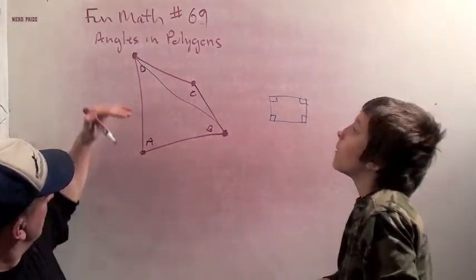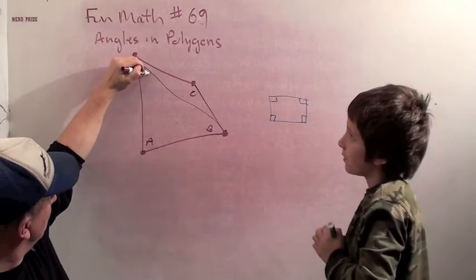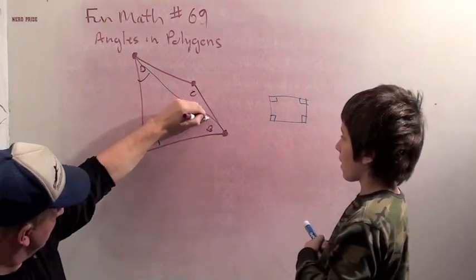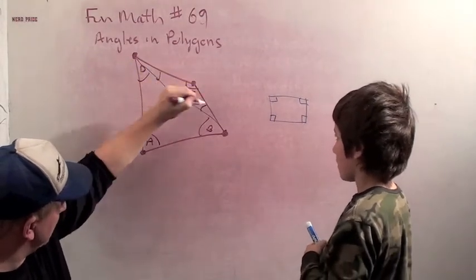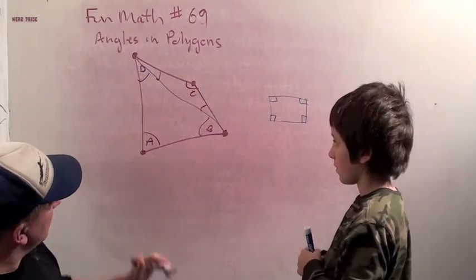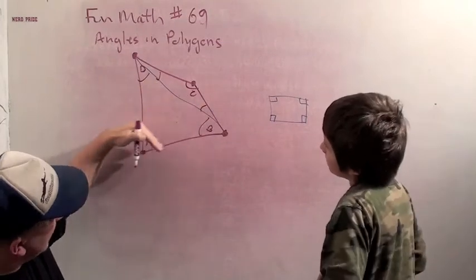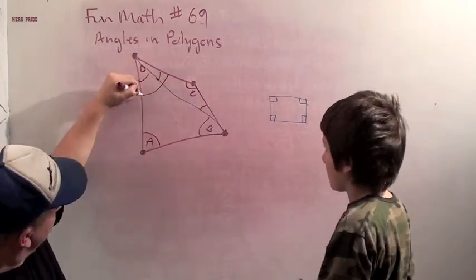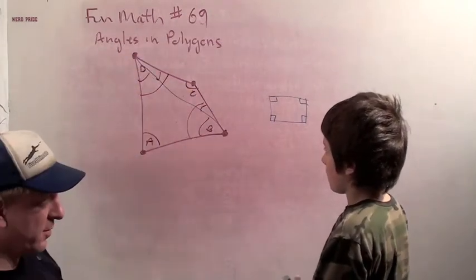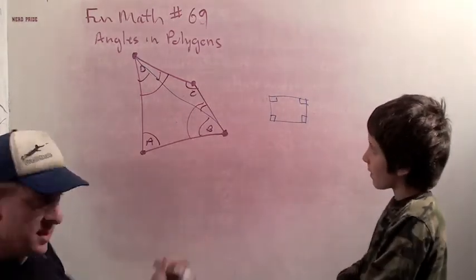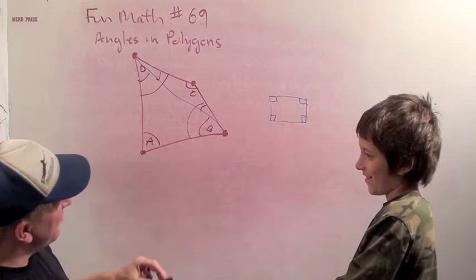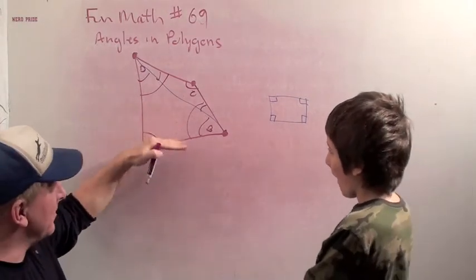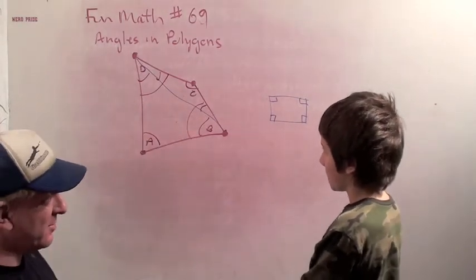So if we cut it into two triangles, we know that this angle plus this angle plus this angle is 180, and this angle plus this angle plus this angle is 180. But notice that all of those angles added together add up to the four angles in the quadrilateral. So for a quadrilateral, the interior angles add up to 360.